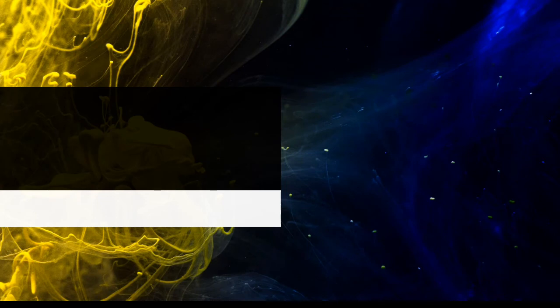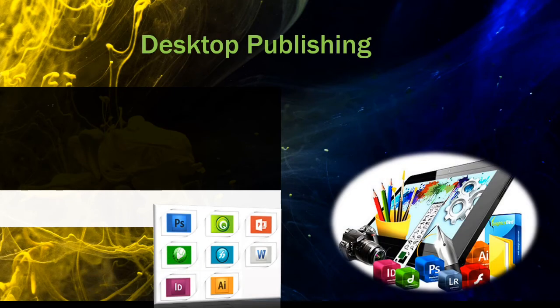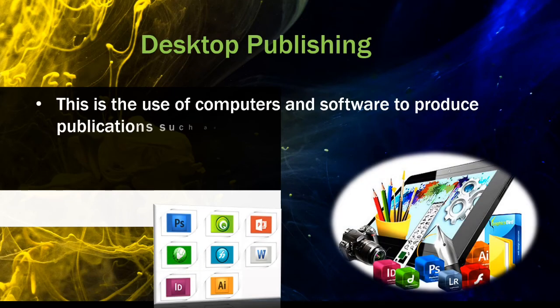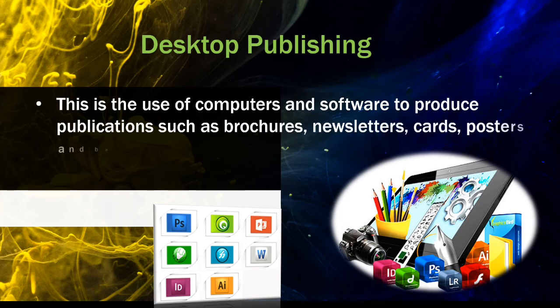Other kinds of publications can be printed and reproduced for different purposes through desktop publishing. This is the use of computers and software to produce publications such as brochures, newsletters, cards, posters, and banners. Even at home, we can have a small printing press. You will learn the skills needed by reading and knowing the succeeding lessons in our subject.